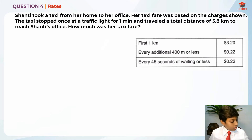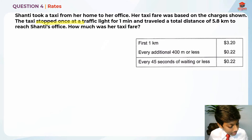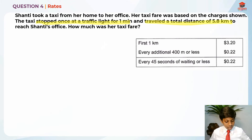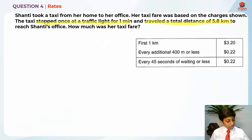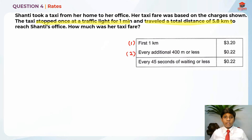They're asking us how much her taxi fare was. Let's highlight the key information: she stopped once at the traffic light for one minute, and traveled a total distance of 5.8 kilometers. So I'll break this into three parts: number one is the first kilometer at $3.20, number two is every additional 400 meters or less, and number three is every 45 seconds of waiting or less.